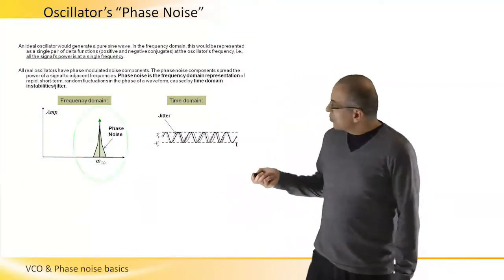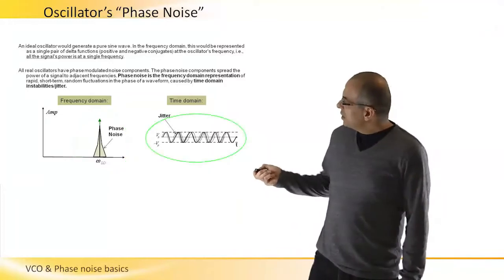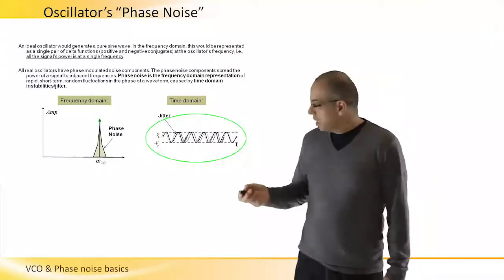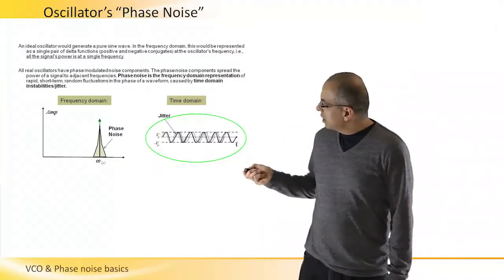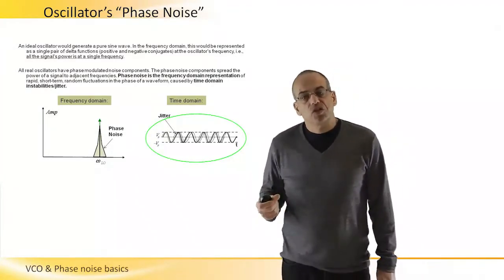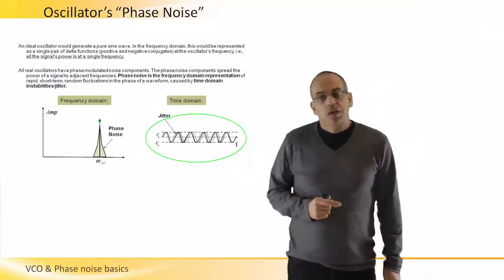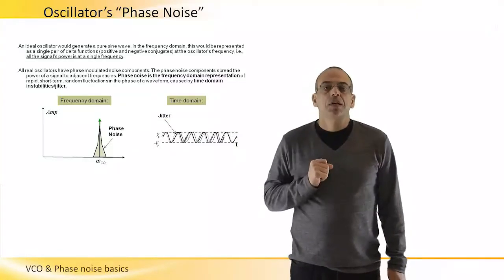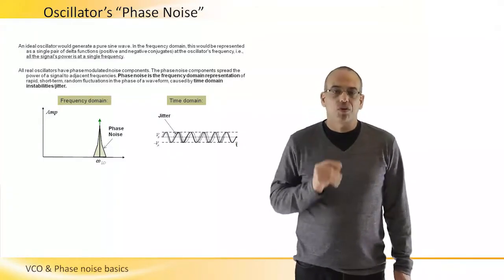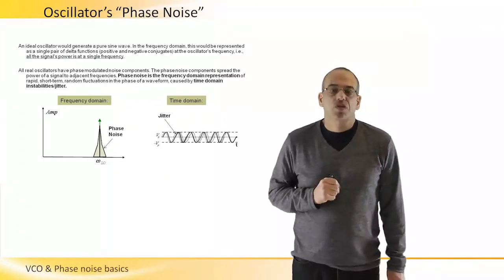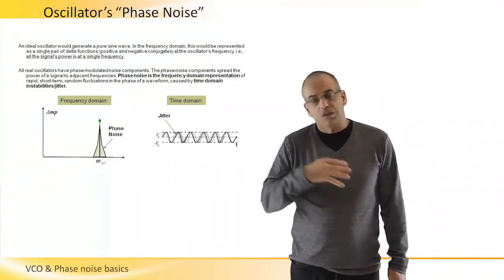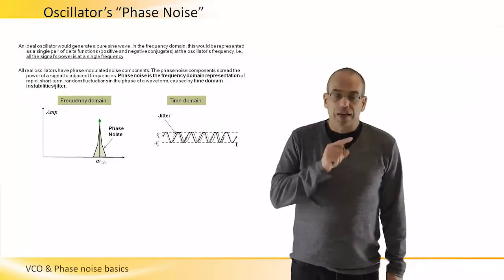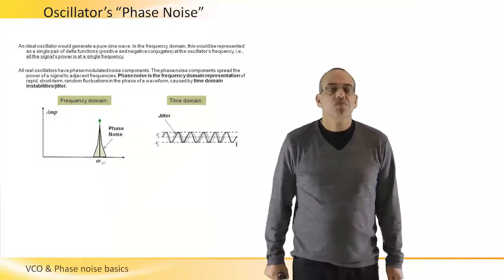So this is the representation in frequency domain. In time domain, the same physical phenomena is called jitter. Basically, if we ideally expect to see an ideal sine wave, the jitter will actually introduce itself as the sine wave being jittered or non-stable versus time. So it's more blurry. If we test it on a scope, for example, the sine wave will be a little bit blurry and not really an ideal sine wave.